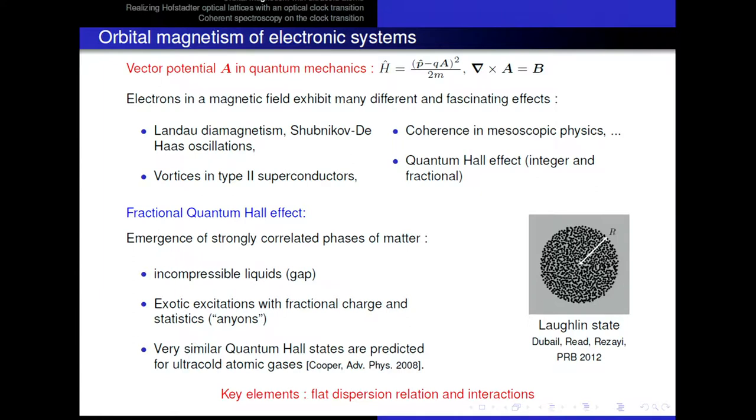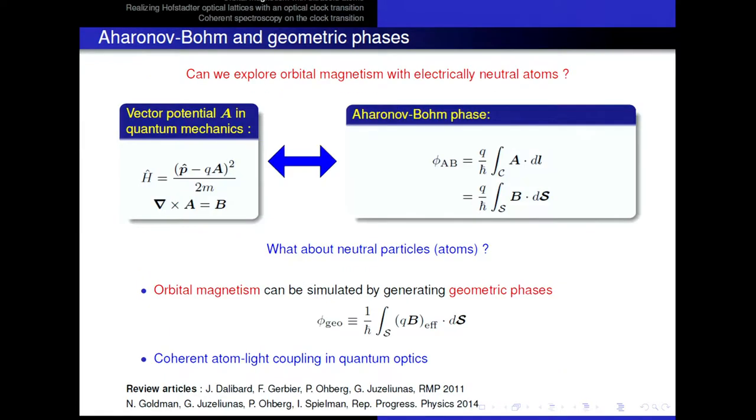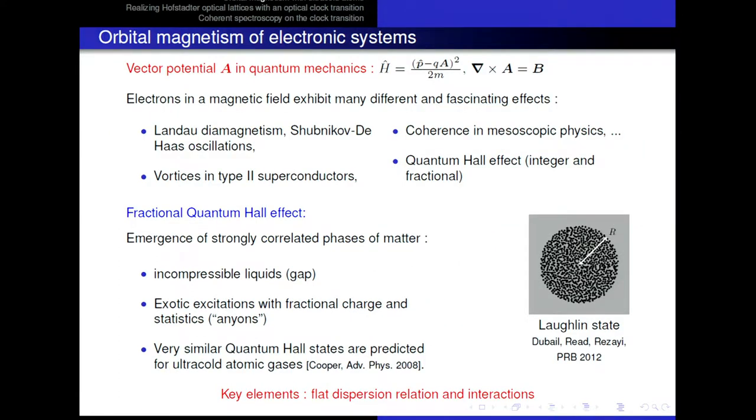And the excitation on top of the ground state are very exotic. They behave as anyons, that is, excitations which carry a fraction of the electron charge, and which behave in a manner intermediate between bosons and fermions. And the fractional statistics is something which has eluded observation, even since the discovery of these phases since the 80s, but which has triggered a lot of interest for fundamental reasons, but also eventually for applications in quantum informations, quantum memories. So, about 20 years ago, it was predicted that in ultracold atomic gases, it is, in principle, possible to observe similar phases to the quantum Hall states,